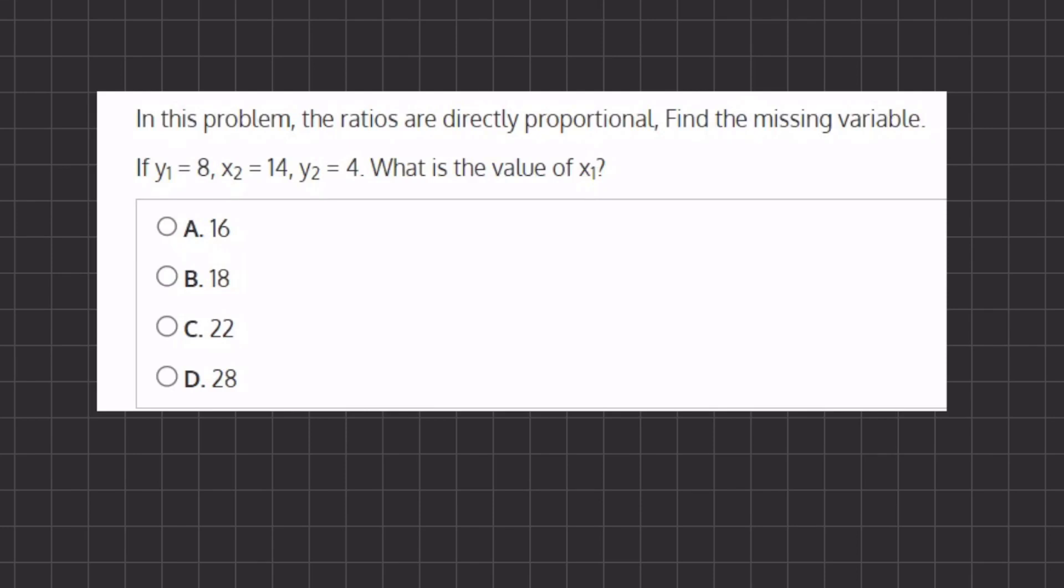All right, so in this problem we have ratios that are directly proportional and that means that our formula is going to look like this: we have y1 divided by y2 equals x1 divided by x2 and we have to find the missing variable.